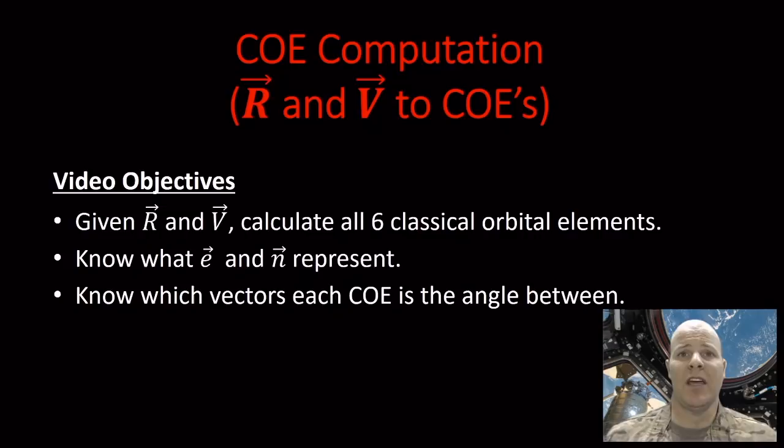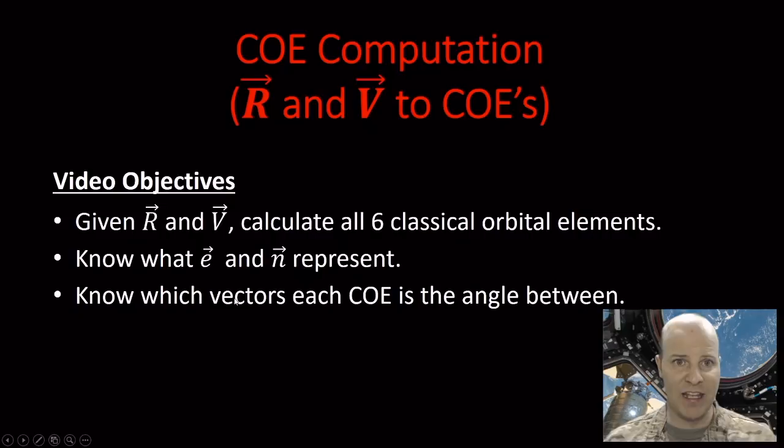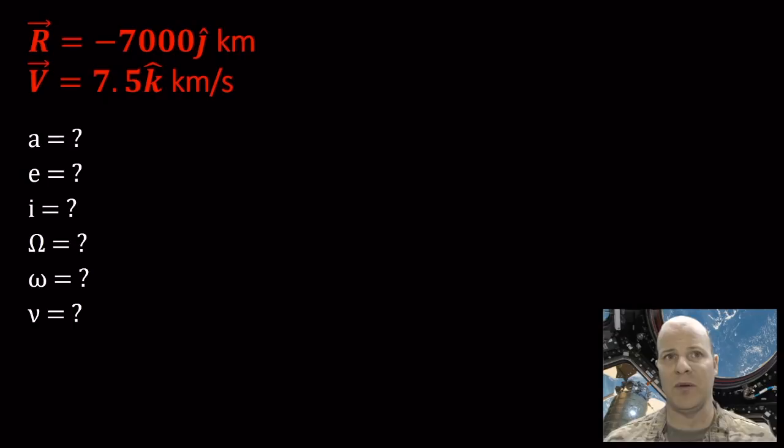In today's video we're going to be talking about COE computation — basically taking an R position vector and a V velocity vector and, from those two bits of information, being able to calculate all six classical orbital elements. By the end you should know what the E vector and the N vector represent, and which vectors each COE is the angle between. We're going to work through an example in detail, and by the end you should have enough principles to solve other problems.